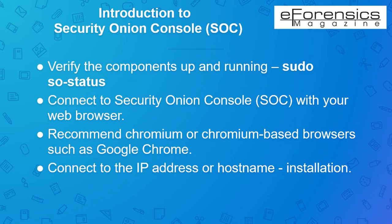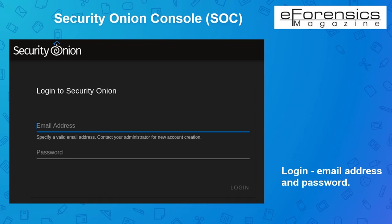It is recommended to use Chromium-based browsers such as Google Chrome for better compatibility, though other browsers may still work. Based on the selections you designated during the installation steps, connect to the IP address 192.168.224.248 in our example, or host name www.example.com in our case, to access the login screen of Security Onion Console.